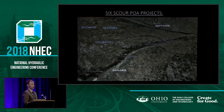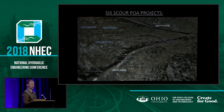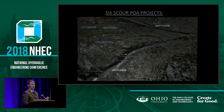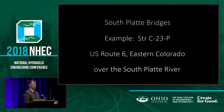This first project highlight, which will be the bulk of the presentation, is a scour critical plan of action project that we just recently completed and is currently now under construction. There were six different scour critical sites located along the South Platte River Basin in northeastern Colorado. I'm going to focus on just one of these structures — Structure C23P — which I personally led the charge on in terms of coming up with some revetment design, coming up with our plan of action, and then implementing it for the scour critical structure.